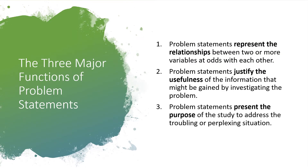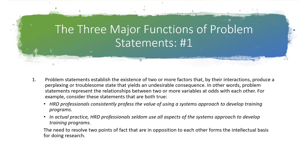So the three functions of problem statements. Problem statements represent the relationship between two or more variables that are at odds with each other. So when we have two facts that don't seem to line up, that means we have two variables that are at odds with one another. We know one thing to be true, we know another thing to be true. When you put them together, they don't seem to make sense. And so the problem statement justifies the usefulness of the information that might be gained by investigating that problem — these two things don't seem to line up, and this is why that matters.